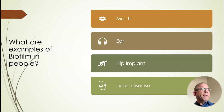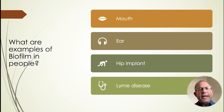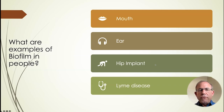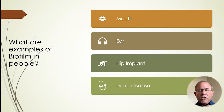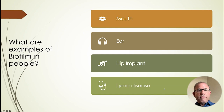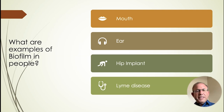What about in people? We all have biofilm in our mouth — that's why we brush our teeth a couple of times a day. We have biofilm in our ears. If you have a hip implant or breast implant, biofilm can grow on the metal surface where the immune system can't easily reach. Lyme disease spirochetes will spin biofilm around themselves to protect against your immune system — it's an ancient war for survival.